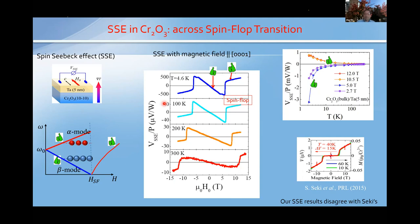Now let me switch to the second topic: how to generate and electrically detect antiferromagnetic spin current using antiferromagnetic spin pumping. This is more recent work, published in Nature earlier this year. For ferromagnets, spin pumping is already a well-established experimental tool — essentially every lab can do this experiment using gigahertz microwave sources.